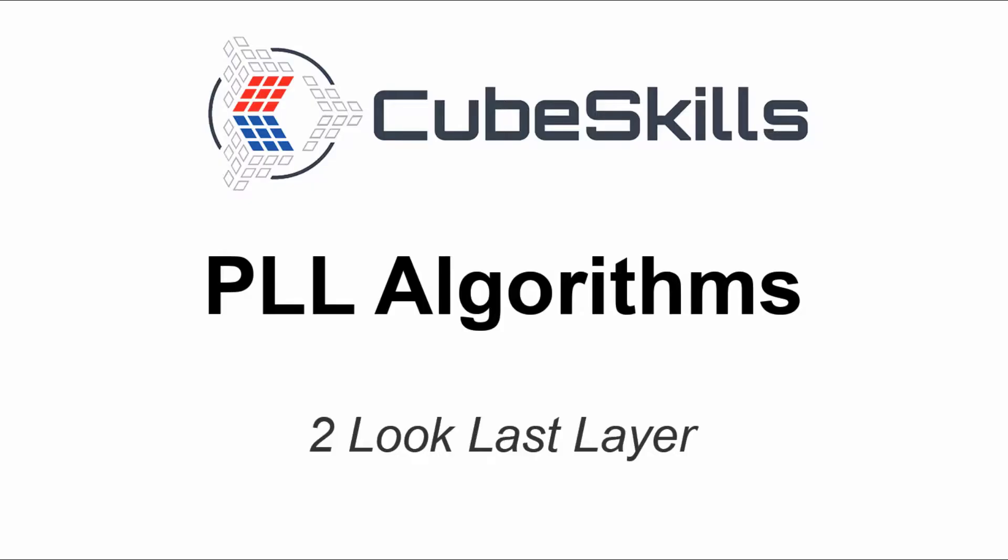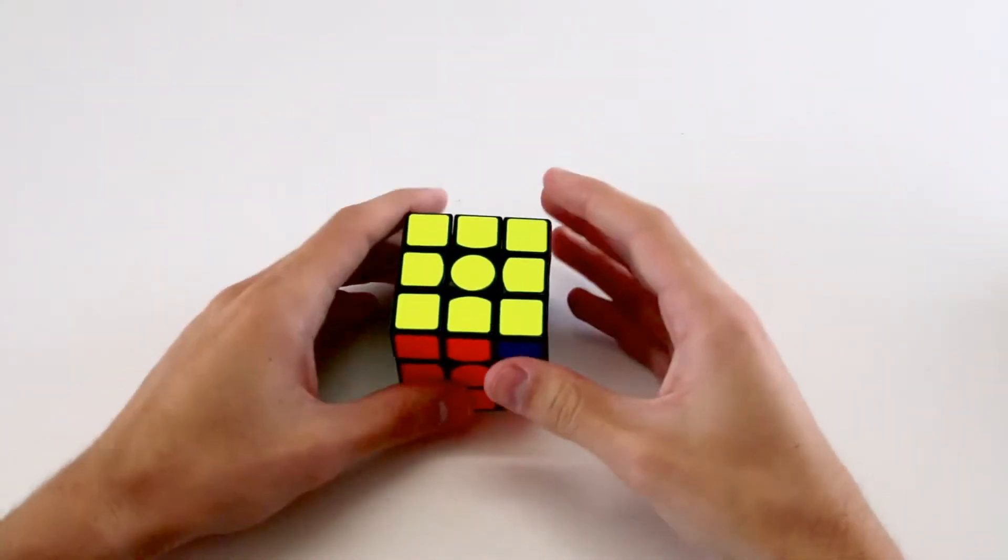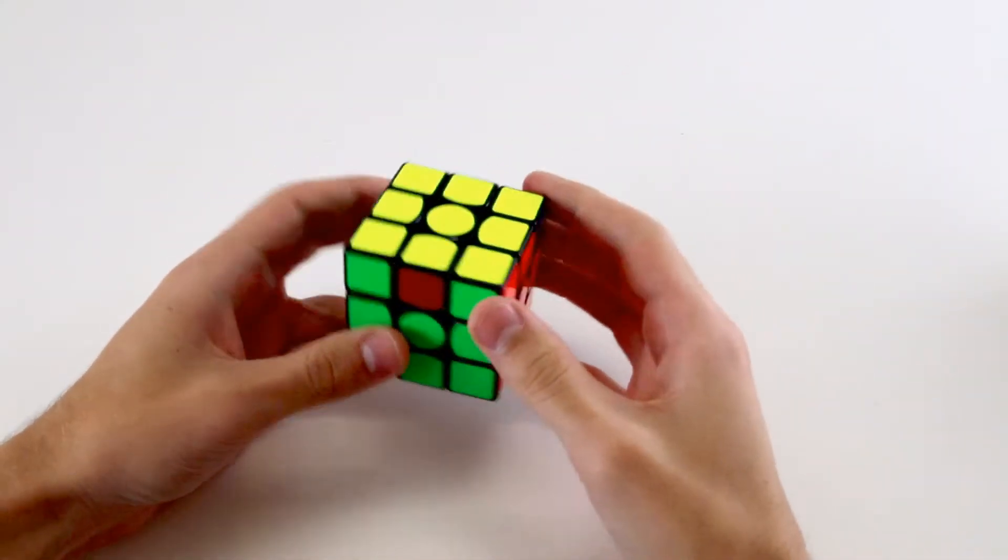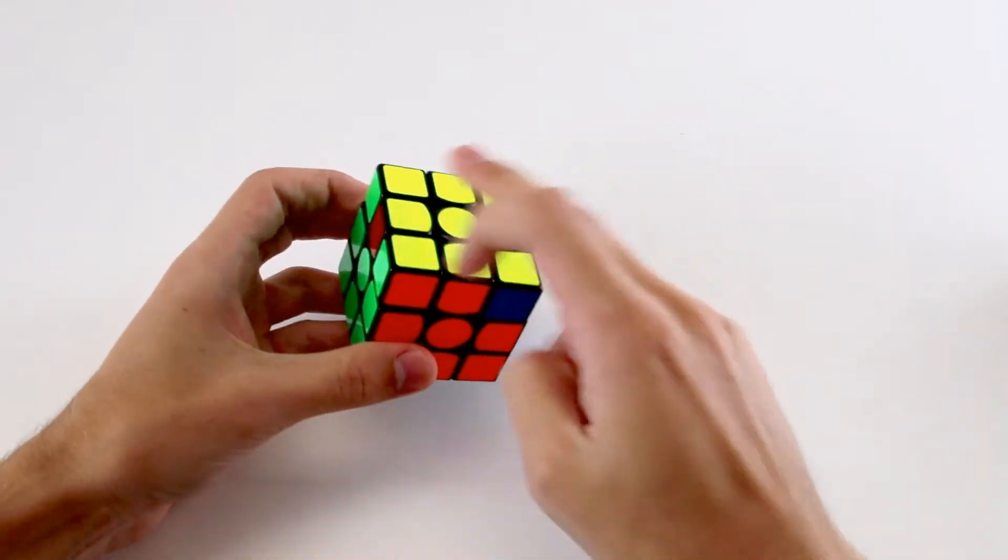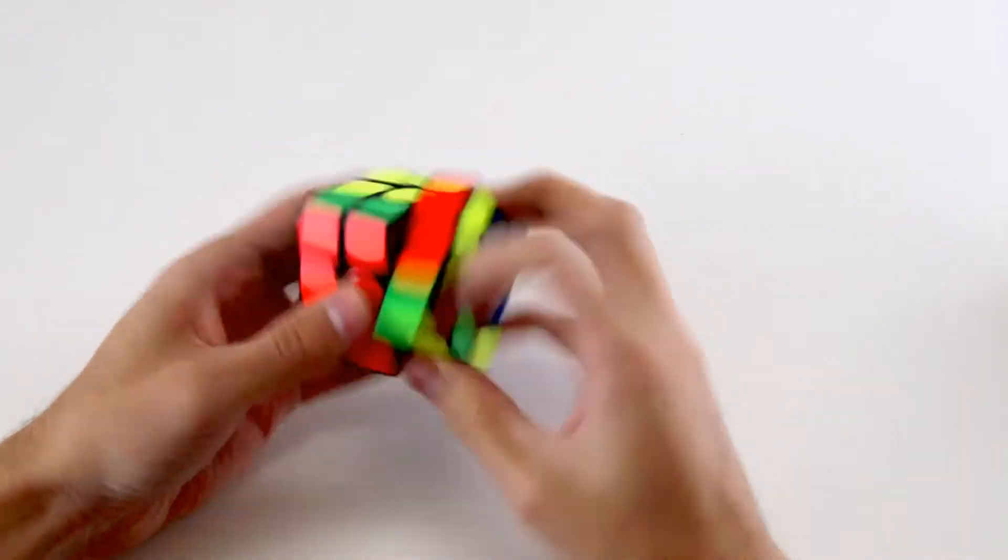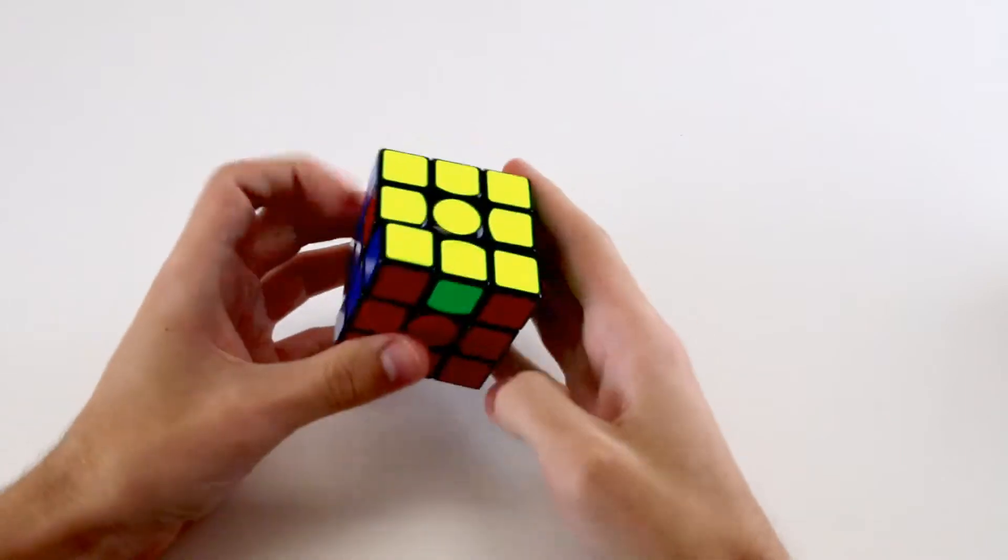In this video I'll give you an overview of the PLL algorithms you'll use to permute your last layer. Currently you're solving the permutation of the last layer, or PLL, in two steps. First you solve the corners, and then you solve the edges.